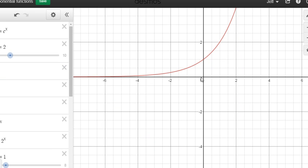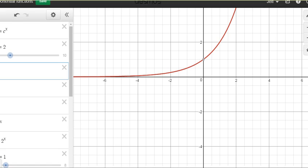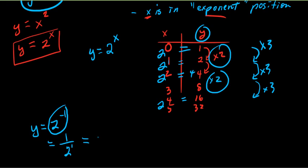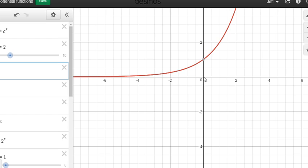What about in the negative region? Two to the power of negative one — what's that? Negative one on the x-axis gives y equals one half. Does two to the power of negative one equal one half? From grade 10, negative exponents mean taking the reciprocal, so 2 to the negative one equals 1/2. Two to the power of negative two is one over two squared, which is one over four. So if x equals negative two, the value is one quarter — 0.25.